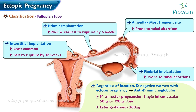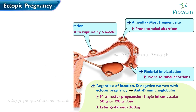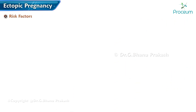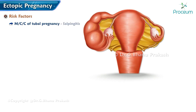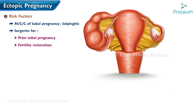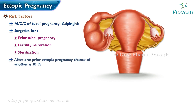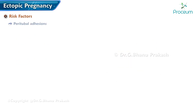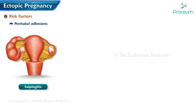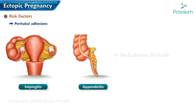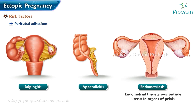Later gestations are given 300 micrograms. Risk factors: the most common cause of tubal pregnancy is salpingitis. Surgeries for a prior tubal pregnancy, fertility restoration, or sterilization confer the highest risk. After one prior ectopic pregnancy, the chance of another nears 10 percent. Paratubal adhesions from salpingitis, appendicitis, or endometriosis also raise chances.